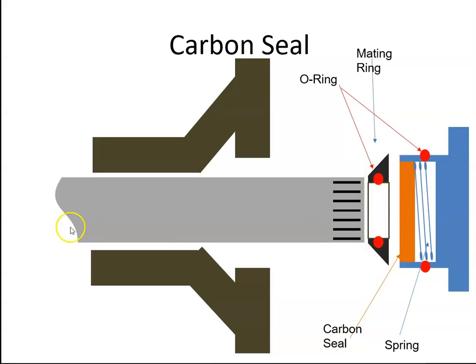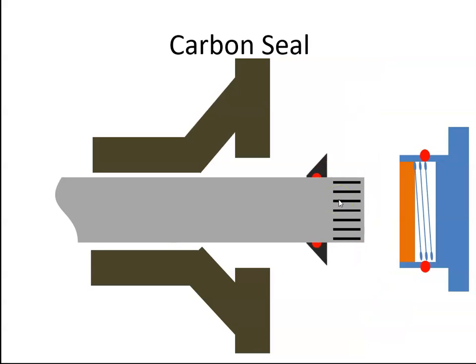So if we have a shaft and it's inside this housing, the first thing we would do is install the mating ring. The mating ring goes onto the shaft and actually mates with the shaft. This mating ring will rotate with the shaft.